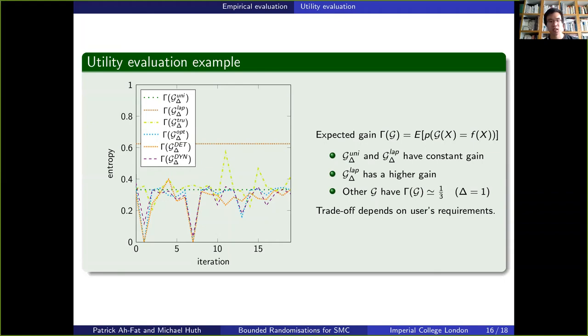As expected, and as our algorithms only care about the maximal distortion bound, they perform quite poorly in terms of expected gain. On the contrary, and as expected, the Laplace mechanism produces a higher expected gain. So we can see that there is a trade-off between utility and privacy and that selecting an appropriate randomizing mechanism really depends on the customer's requirements.